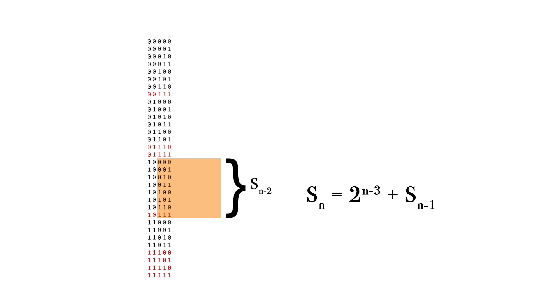For the 5 digits, the number of bad sequences equals 2 to the power n-3 plus the bad sequences found on the previous step and on the step before the previous one.